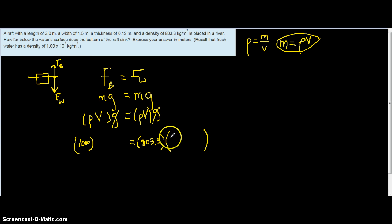Its volume is going to be, since it's a raft, we assume it to be rectangular prism, so length times width times height, so 3 times 1.5 times 0.12, length, width, height, for the raft, for the amount of water displaced by the raft, here's what we do know.